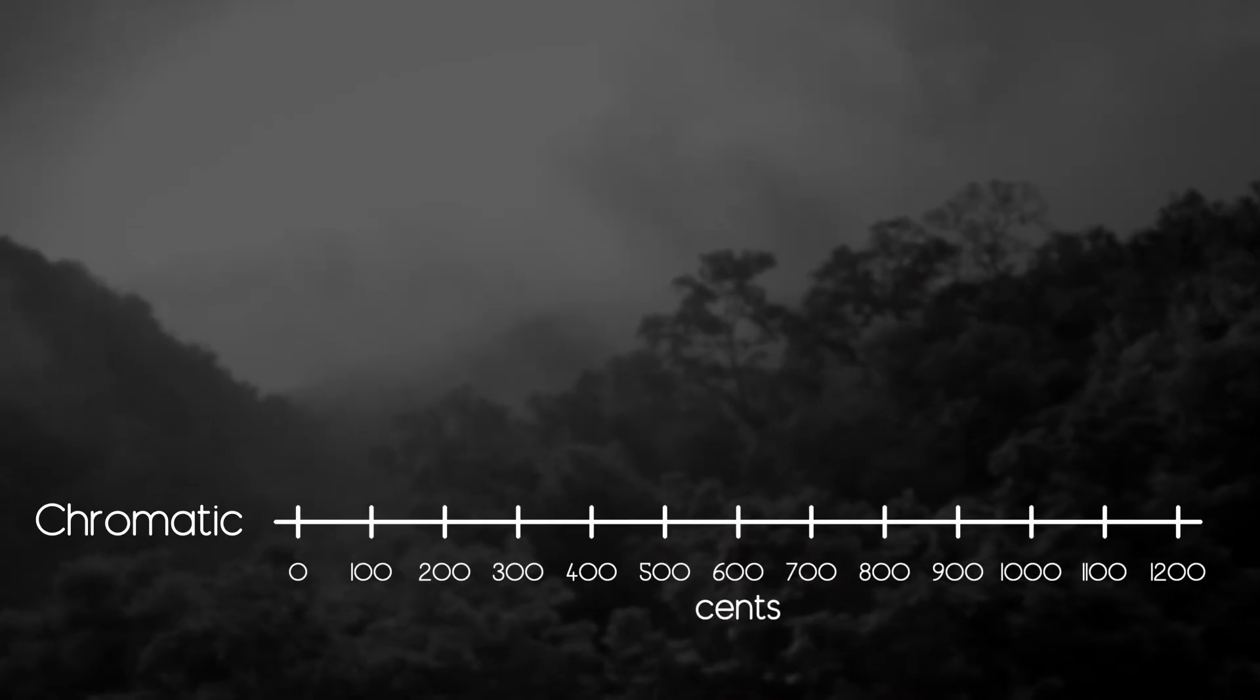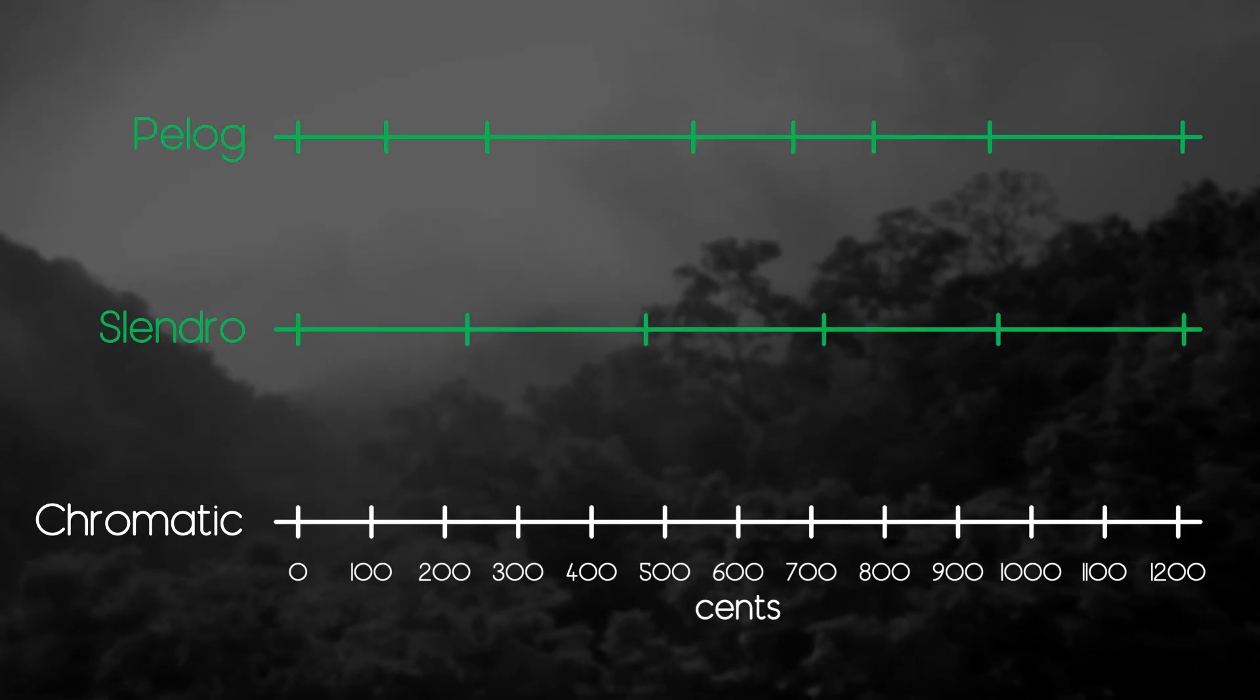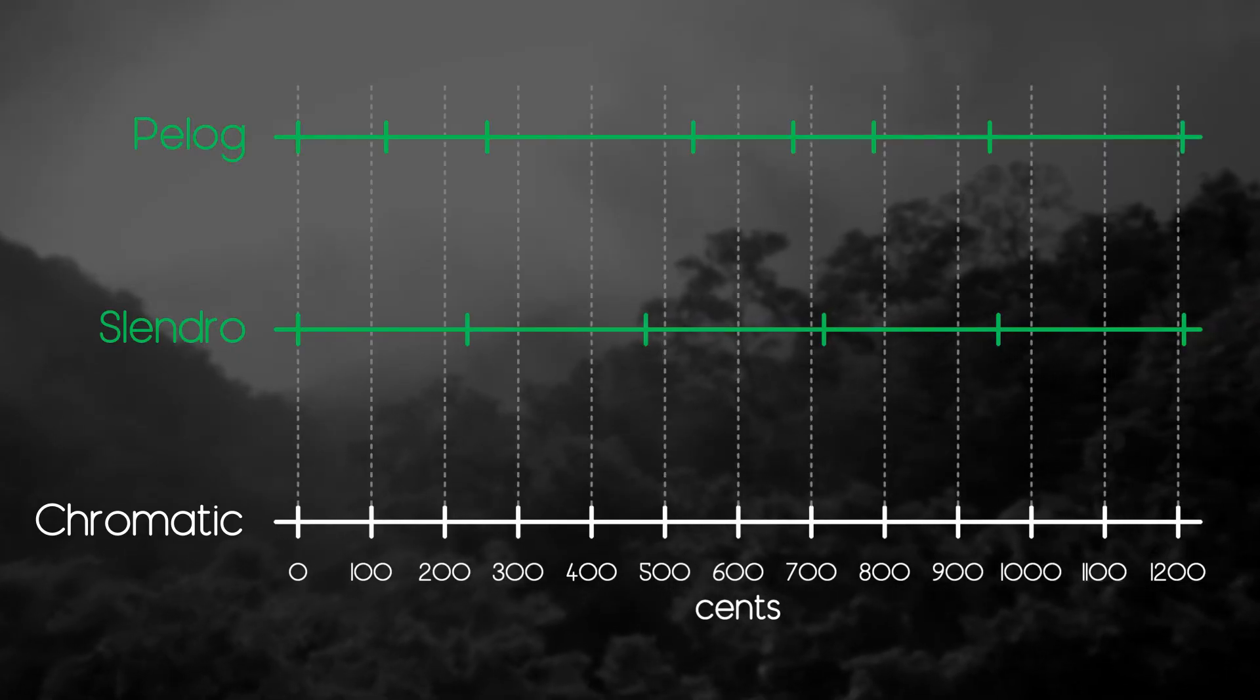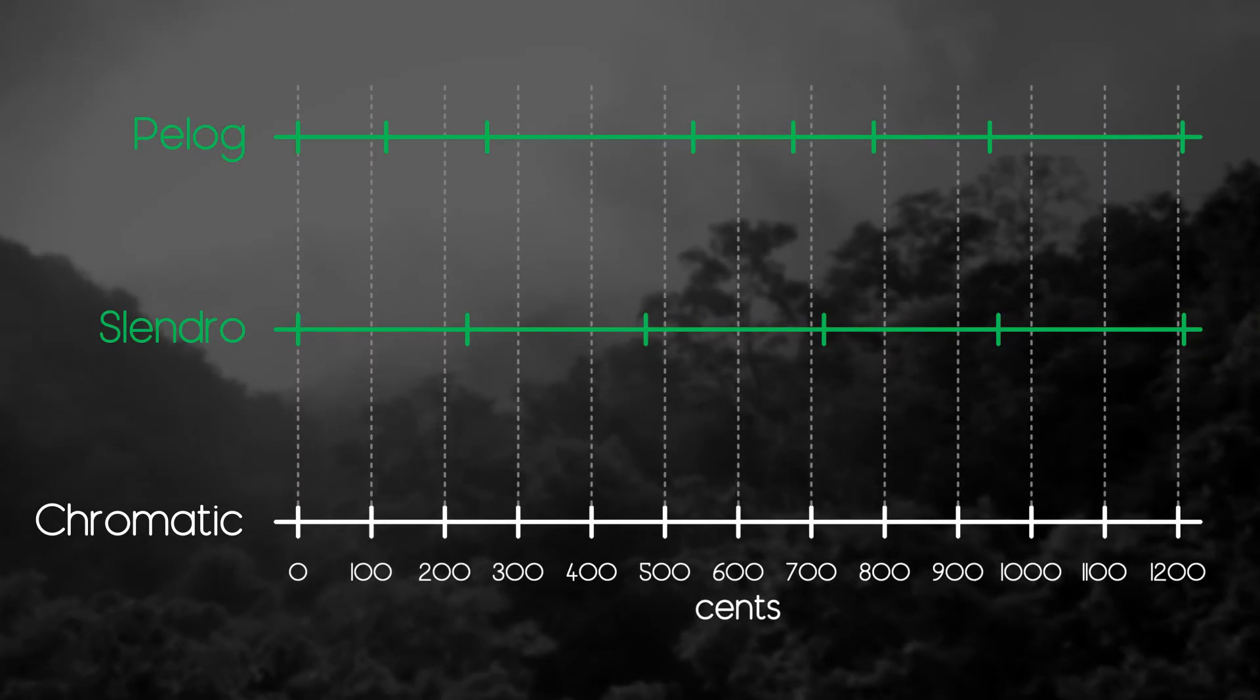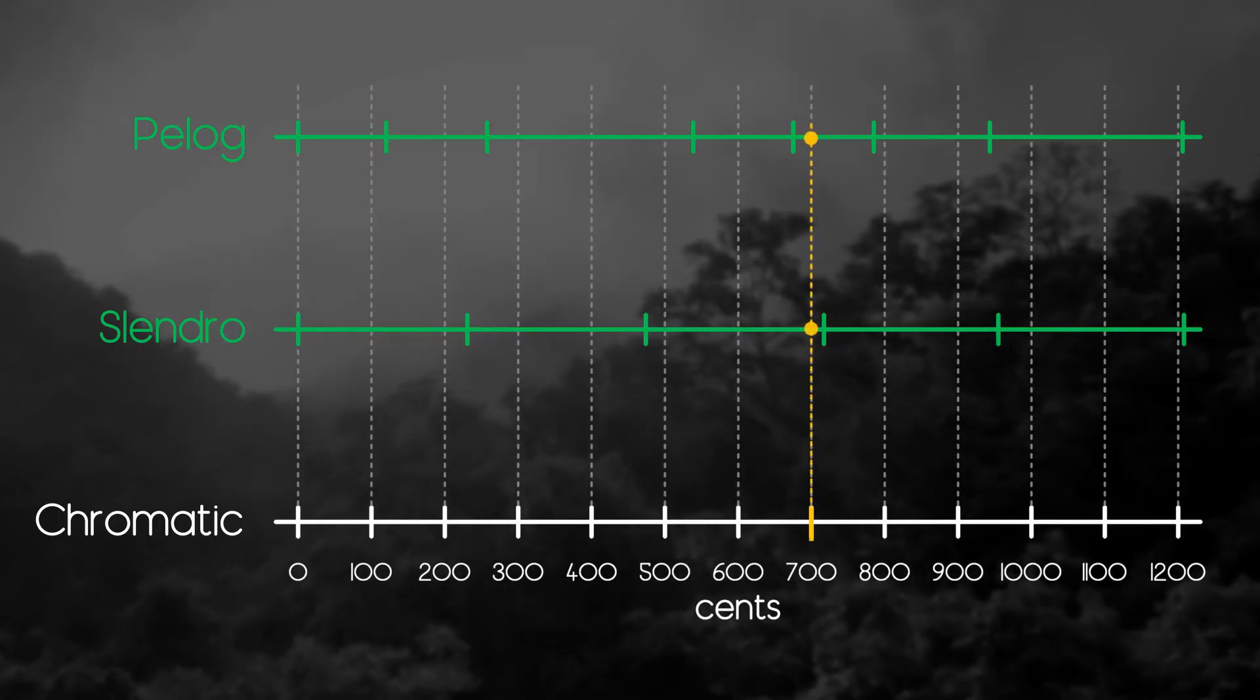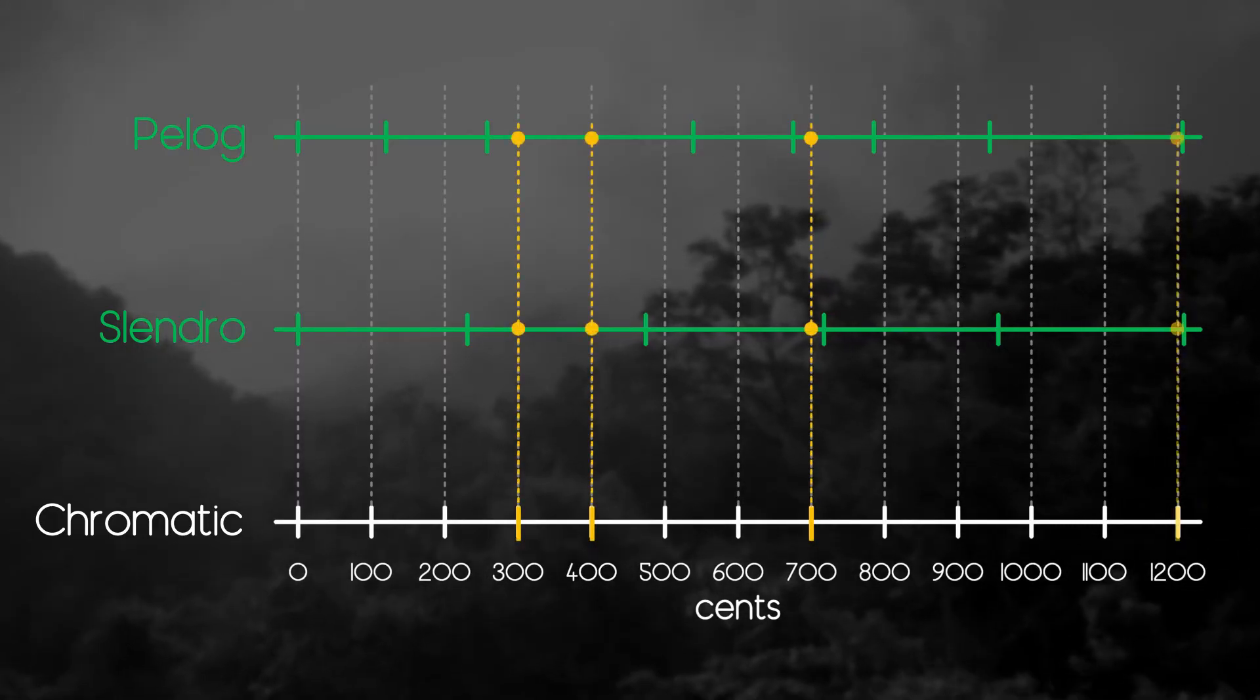There are two tuning systems in Gamelan: Slendro and Pelog. If we compare them with chromatic scale that we use, we can see that there are no familiar intervals, no fifths, no thirds, and even the octave is a bit off.